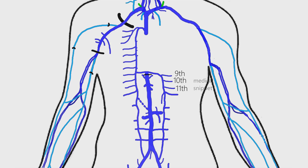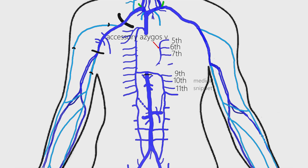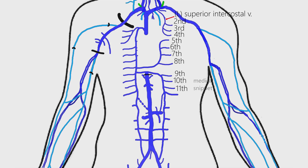The hemi-azygos vein communicates with the left renal vein. The accessory azygos vein receives blood from the fifth to eighth posterior intercostal veins and drains into the azygos vein at the level of T7 vertebra. The left superior intercostal vein is formed by the union of the second to fourth left posterior intercostal veins and drains into the left brachiocephalic vein. The first posterior intercostal vein on the left side also drains into the left brachiocephalic vein.